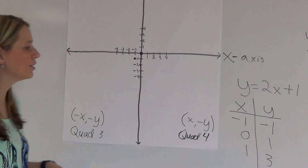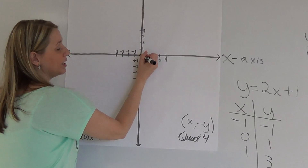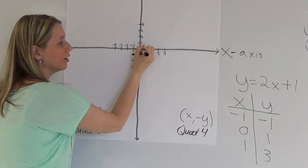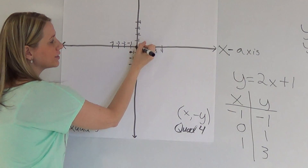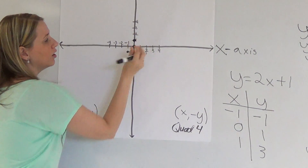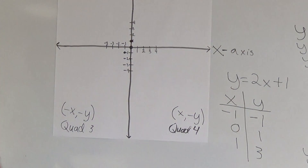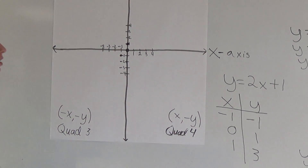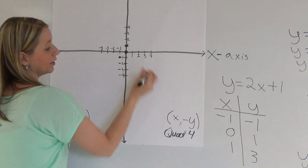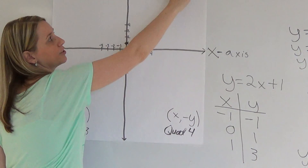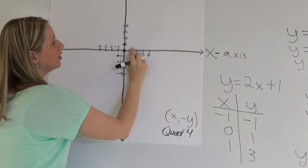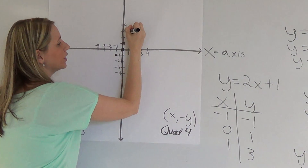Then you've got your second one: 0, 1. That means 0 means I don't move on the x-axis at all, so I'm going to stay right here. And then I go 1 on the y-axis, so I just move up, and it ends up being on the y-axis. Then you've got the point 1, 3. You go over 1 — and see how they're both positive? That tells you they're going to be in quadrant 1. Positive 1, and then up positive 3.